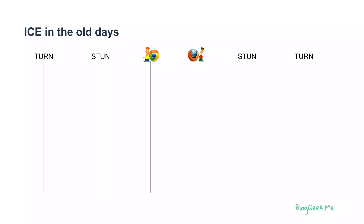In the old days, ICE was conducted in the following fashion. First of all, the user went ahead to ask 'what is my IP?' or to get a relay. This was done in front of STUN and TURN servers. These messages are there in order to collect the actual IP addresses that we are going to use through the ICE negotiation process.